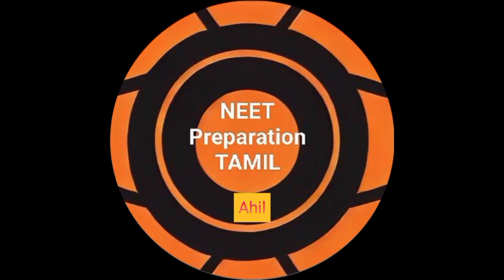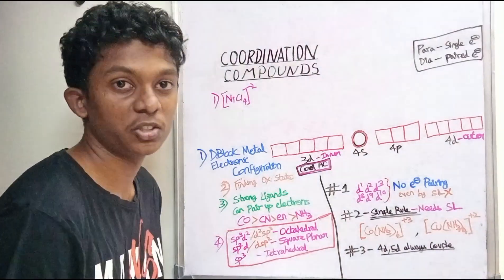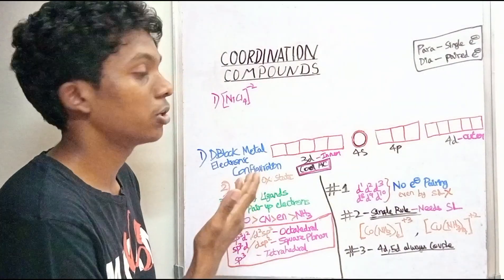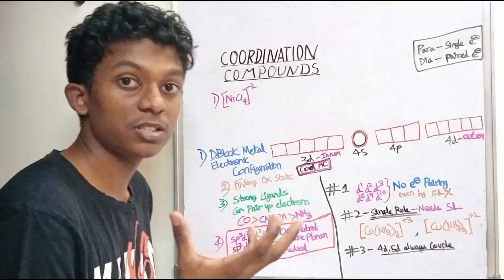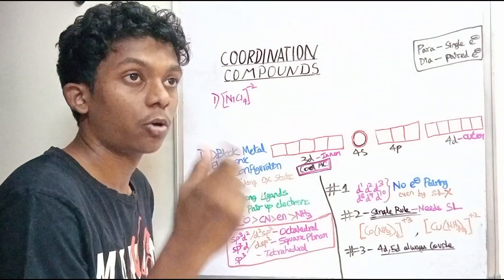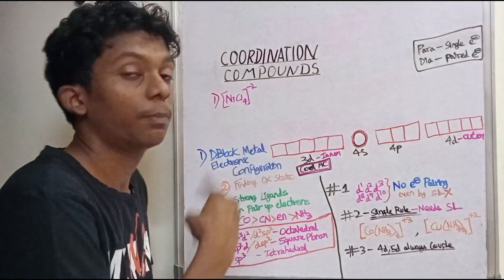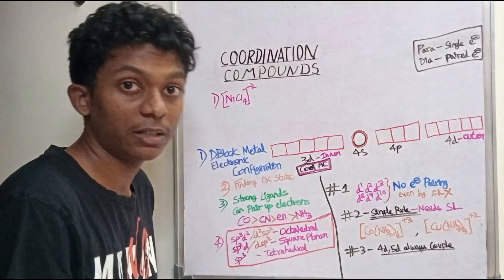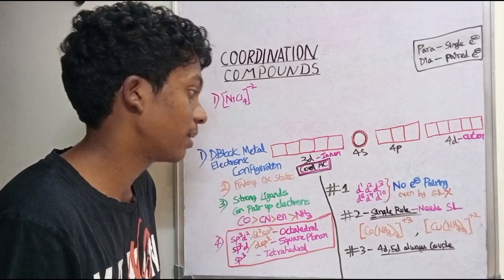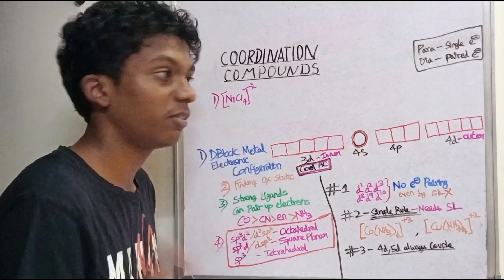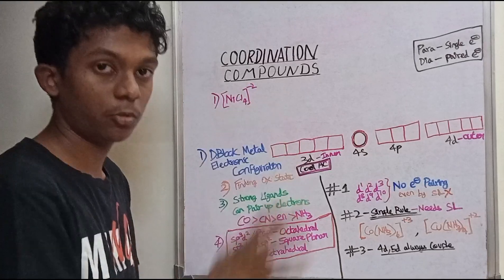Welcome to NEET Preparation Tamil. Hello everyone, welcome to NEET Preparation Tamil. This is Coordination Compounds Part 10. In this video, we will see how hybridization works, how a complex's hybridization determines geometry, what paramagnetic complex means, diamagnetic complex, inner orbital complex, and outer orbital complex.